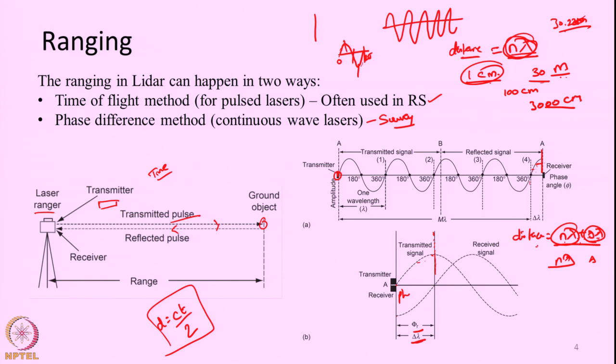The phase difference method is normally not used for airborne or spaceborne systems — there we use the time of flight method, measuring the time taken for the laser pulse to go and come back. In the time of flight method, the accuracy of the ranging system depends on the accuracy with which we measure the time. Some spaceborne systems have a precision in the order of picoseconds.